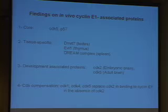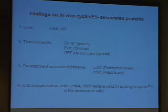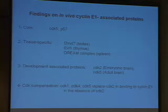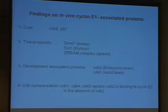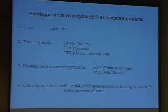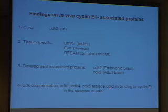The third result was our identification of Cyclin-E in brain development. We found that while it binds to CDK2 in embryonic brain, during brain development there is a switch in the type of cyclin-dependent kinases that bind to Cyclin-E. In adult brain, CDK5 instead of CDK2 is the main interactor of Cyclin-E. Lastly, we're interested in CDK compensation — what if you don't have CDK2? We found that CDK1, 4, and 5 replace CDK2 in binding to Cyclin-E in the absence of CDK2, and this was done in CDK2 knockout mice.